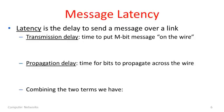Given that simple model, we can already do some useful things. For instance, we can compute the message latency — the delay to send a message across a link. It actually turns out that the latency is composed of two separate components. First, there's something called the transmission delay. This is the time to put a message that's M bits long onto the link, sending it out at a certain rate R. That delay component is simply M divided by R.